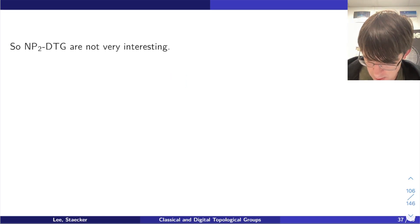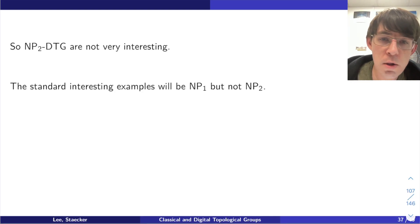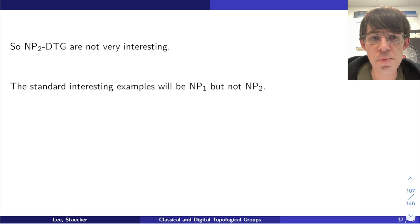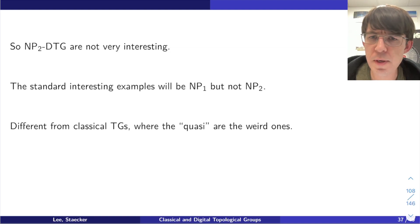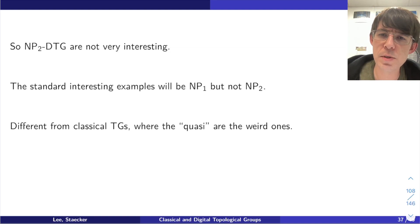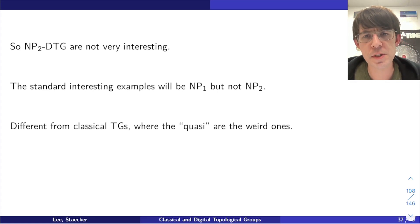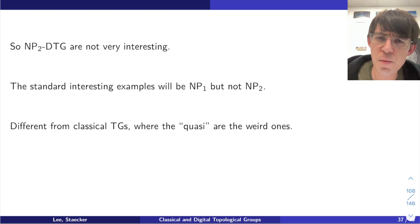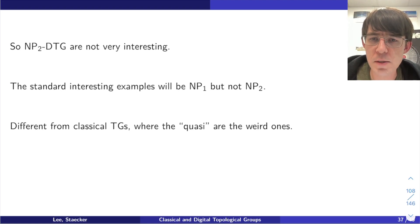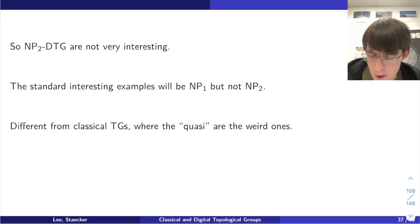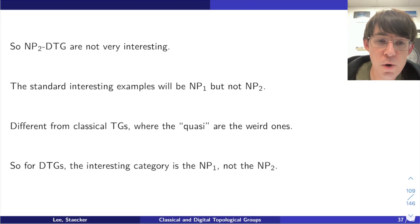The NP2s are not very interesting. What about NP1s? All of the interesting and standard examples are NP1s but not NP2s. This is different from the classical situation where NP1s correspond to quasi-topological groups — the weird ones. In this theory the NP1s are the ordinary interesting ones. The NP2s are easy to classify but not interesting; the NP1s are the main focus. This was the big takeaway from the paper — the interesting category for digital topological groups is NP1, not NP2.